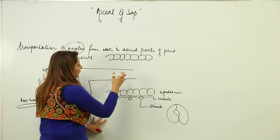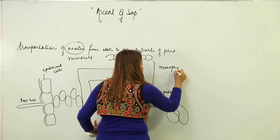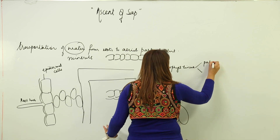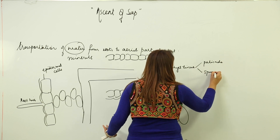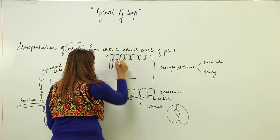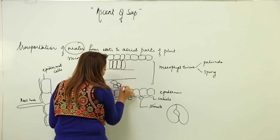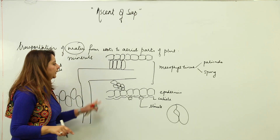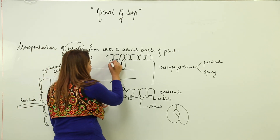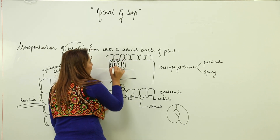Inside the leaf, the cells form a mesophyll tissue consisting of two kinds of cells: palisade cells, which are long, and spongy cells, which are irregularly arranged. The cells have large vacuoles and chloroplasts. We discussed this diagram previously when studying the mechanism of photosynthesis and the position of chloroplasts.